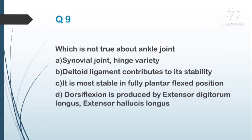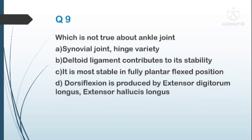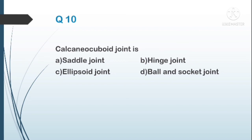Question number nine: which is not true about the ankle joint? A) synovial joint hinge variety, B) deltoid ligament contributes to its stability, C) it is most stable in fully plantar flexed position, D) dorsiflexion is produced by extensor digitorum longus and extensor hallucis longus. The answer is C — it is most stable in dorsiflexion, not in the fully plantar flexed position.